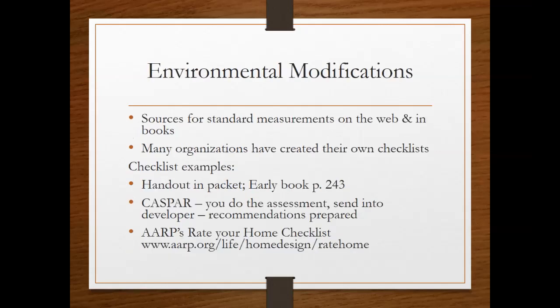As OTs and OTAs, a lot of times we'll go out and do home evaluations for people before they're released from the hospital, rehabilitation facility, or skilled nursing facility. The OT — maybe the PT — will go out, or the family if the patient can't come. We'll measure doorways, see how many steps they have, how long a ramp would need to be, whether they can reach the refrigerator, where the washer and dryer are, and what changes need to be made. It's very common for us to go out and do a home assessment so families can make modifications as needed.